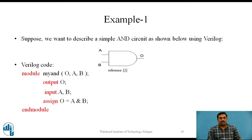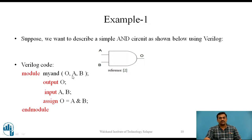Now let us say we want to describe a simple AND circuit as shown in the figure. Here A and B are the inputs and O is the output. The Verilog code to describe this simple AND circuit starts with the module keyword followed by the module name — in this case MYAND — followed by, in brackets, the list of ports. O is the output port defined first, followed by the two input ports A and B, defined using the output keyword and input keyword respectively, each followed by a semicolon.